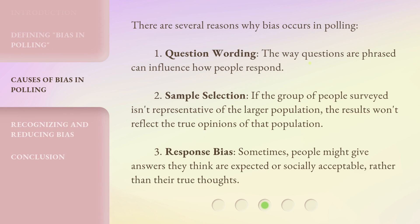There are several reasons why bias occurs in polling. 1. Question wording: the way questions are phrased can influence how people respond. 2. Sample selection: if the group of people surveyed isn't representative of the larger population, the results won't reflect the true opinions of that population. 3. Response bias: sometimes people might give answers they think are expected or socially acceptable, rather than their true thoughts.